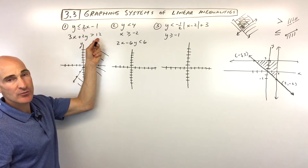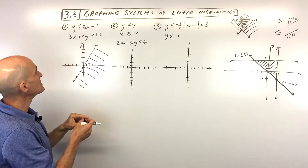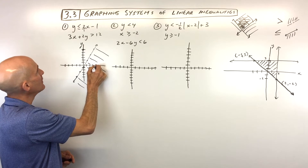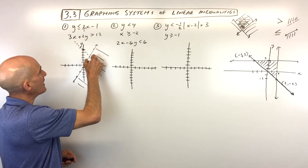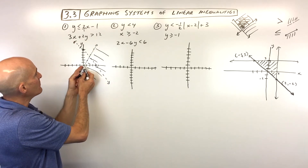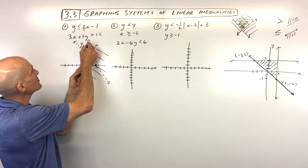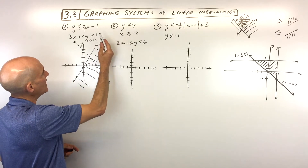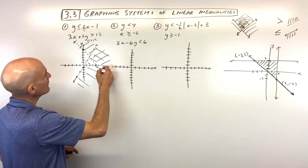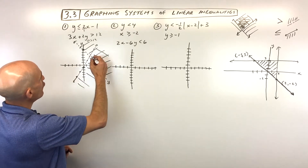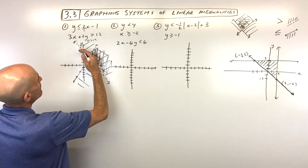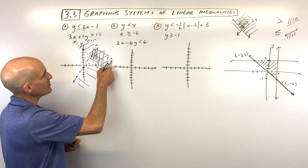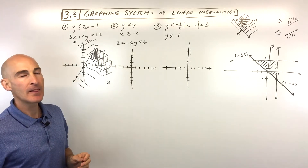For the second inequality, the variables are on the left and numbers on the right, so I'll use the intercept method. Setting x to 0 and dividing by 2, the y-intercept is 6. Setting y to 0 and dividing by 3, the x-intercept is 4. It's greater than but not equal to, so I make this a dashed or dotted line. Using the test point at the origin: 0 is 0 greater than 12? No — so the origin is not on the true side, and I shade the other side using perpendicular lines. You can see the two shadings overlap right here — above this second line and below the first — and that's our solution region. Students can also use colored pencils to see the overlap clearly.